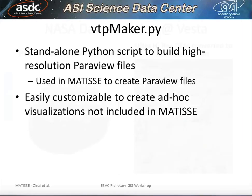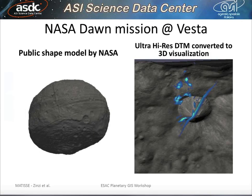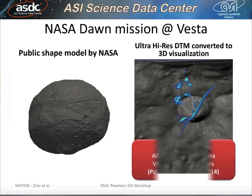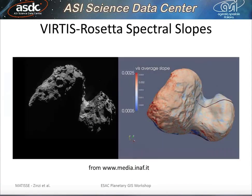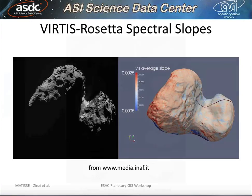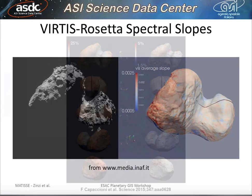The script is customizable to create visualizations not included in Matisse, such as maps of parameters. For example, this is a visualization of Vesta with very high resolution, two layers: the albedo from the Dawn camera and some VIR-derived parameters. Also shown are VIRTIS Rosetta spectrum slopes. This has been created with ParaView and published in Science.